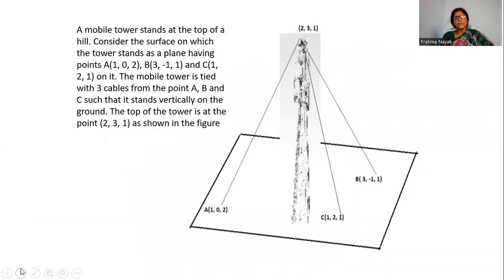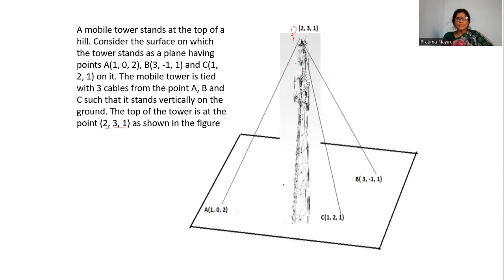A mobile tower stands at the top of a hill. Consider the surface on which the tower stands. There is a plane having points A(1, 0, 2), B(3, −1, 1), and C(1, 2, 1) on it. The mobile tower is tied with three cables from the points A, B, C such that it stands vertically on the ground. The top of the tower is at P(2, 3, 1), as shown in the figure.